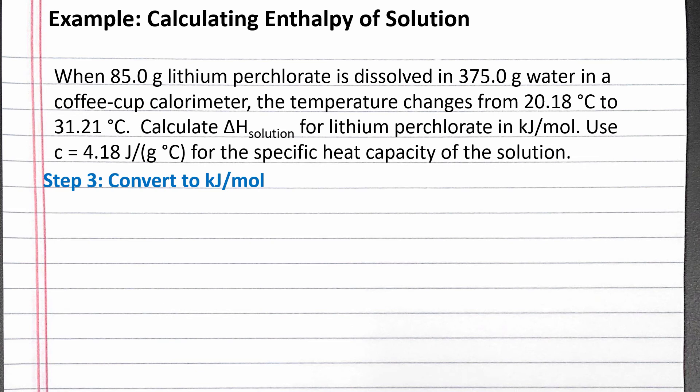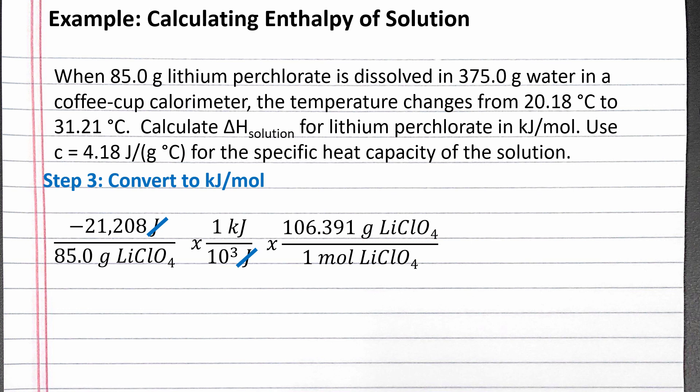Our last step is to convert to kilojoules per mole of lithium perchlorate. We did not use one mole of lithium perchlorate in this experiment. We used 85.0 grams. So we'll start our dimensional analysis with the heat that was released, negative 21,208 joules per 85.0 grams of lithium perchlorate. We can convert from joules to kilojoules using the definition of kilo. And we can use the molar mass of lithium perchlorate to convert from grams of lithium perchlorate to moles of lithium perchlorate. Completing the calculation, we get negative 26.5 kilojoules per mole of lithium perchlorate as the enthalpy of solution.